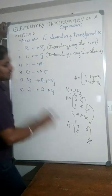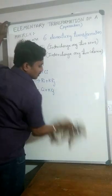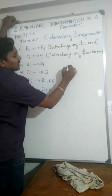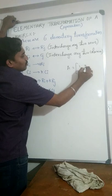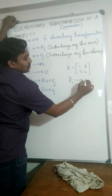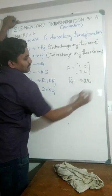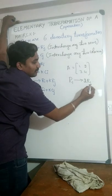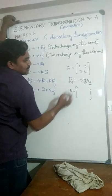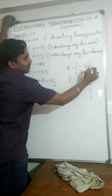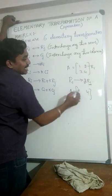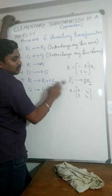The next two operations: R1 tends to K times R1. Taking the same matrix 1, 2, 3, 4, suppose the operation is R1 tends to 2 times R1. This means multiply the row 1 elements by 2. The matrix A becomes: 1 times 2 is 2, 2 times 2 is 4 for row 1. The second row elements remain as they are, because there is no operation for the second row.